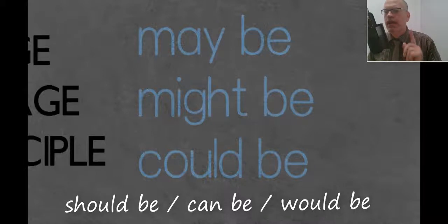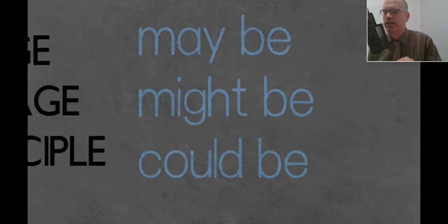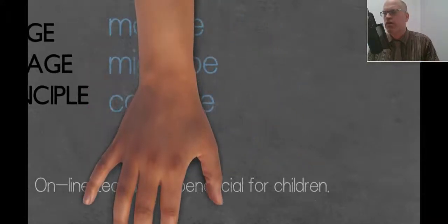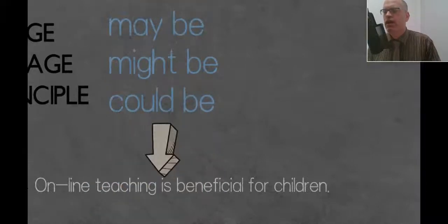Maybe, might be, and could be. Now notice that this sentence has the main word there is beneficial. That's an adjective. So we must have this verb be. So we've got a modal plus be plus the adjective. So might be beneficial or could be beneficial. That's very important to understand.